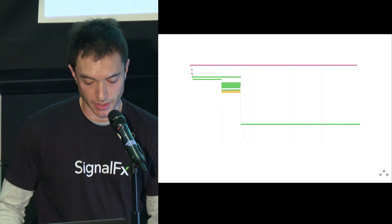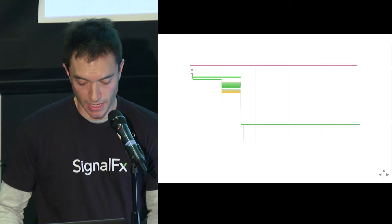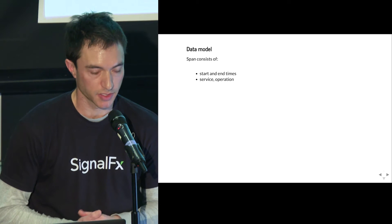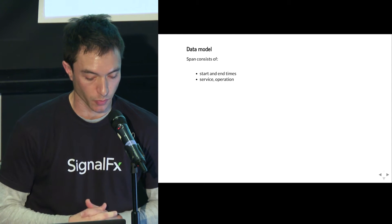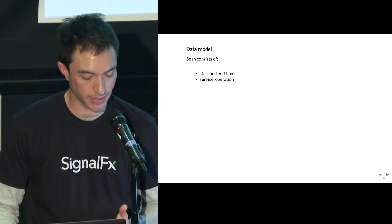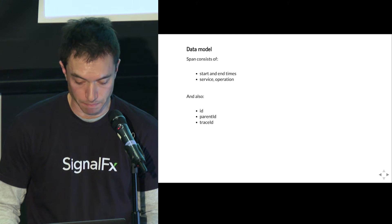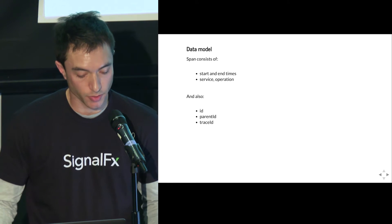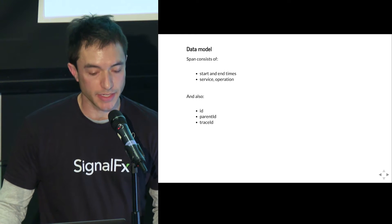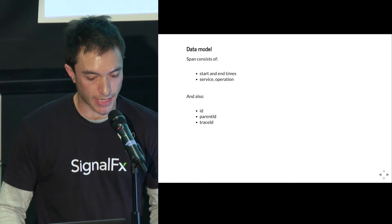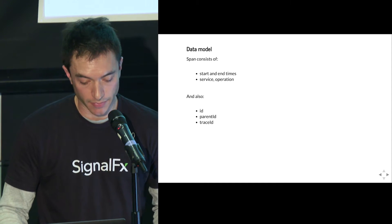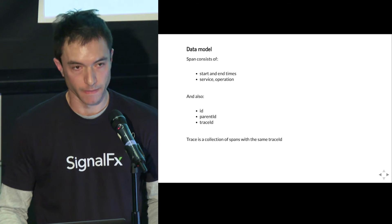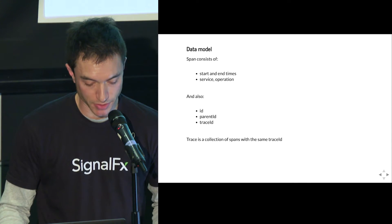There are parent-child relationships among the different operations — some services may call themselves and then eventually call other services. The different colors represent different services. A span consists of a start and end time, the service and operation involved, and can be augmented with additional tags capturing execution context. There's also a parent ID, which allows us to construct a directed acyclic graph from the execution, and an ID for the containing trace.